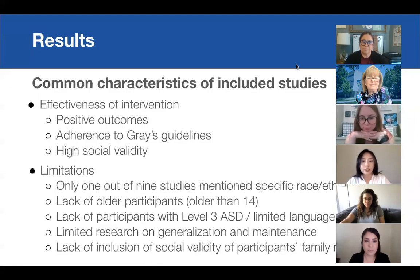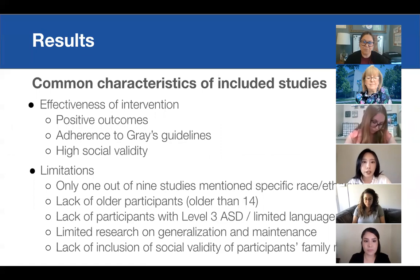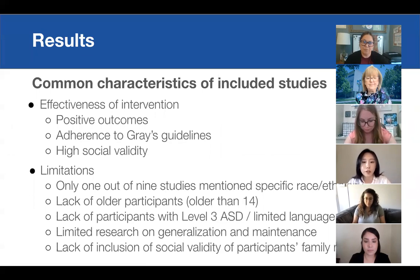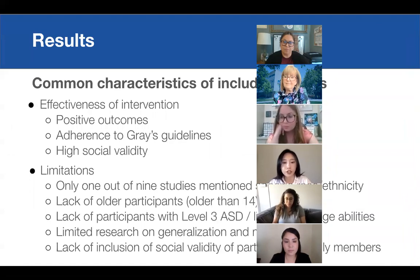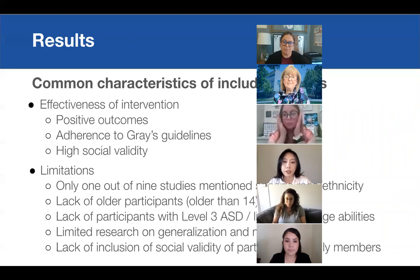The data analysis showed common characteristics among the selected studies, including the effectiveness of the intervention and its limitations. All nine studies had positive outcomes with desired changes in participant behaviors. The majority of studies adhered to Gray's guidelines, and those that provided social validity data showed that most teachers and students reported positive reviews of the intervention strategy. Common limitations included the lack of mentioning the specific race and ethnicity of participants, with only one out of nine studies including that description.